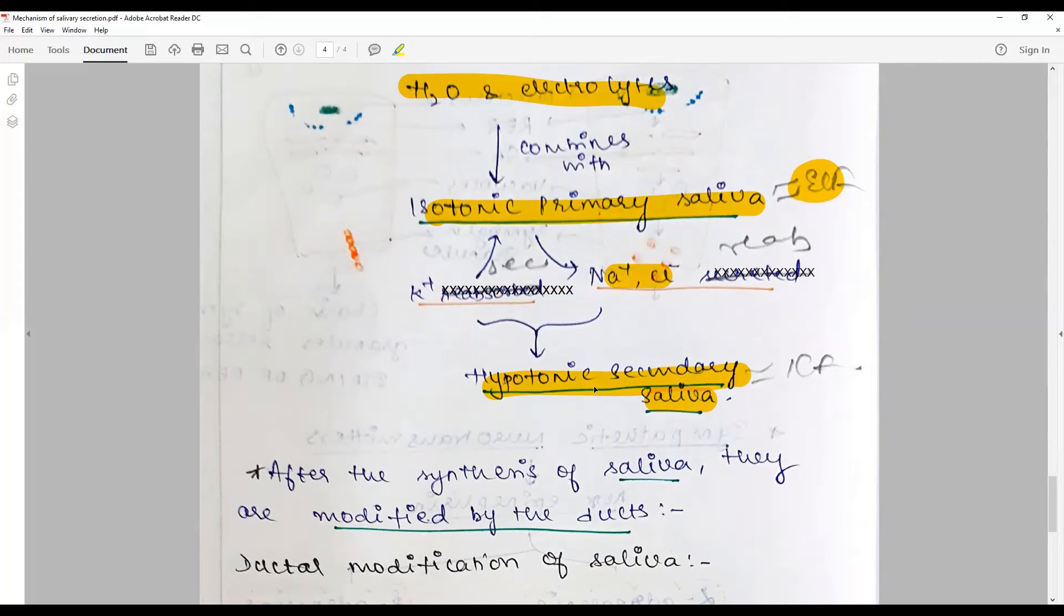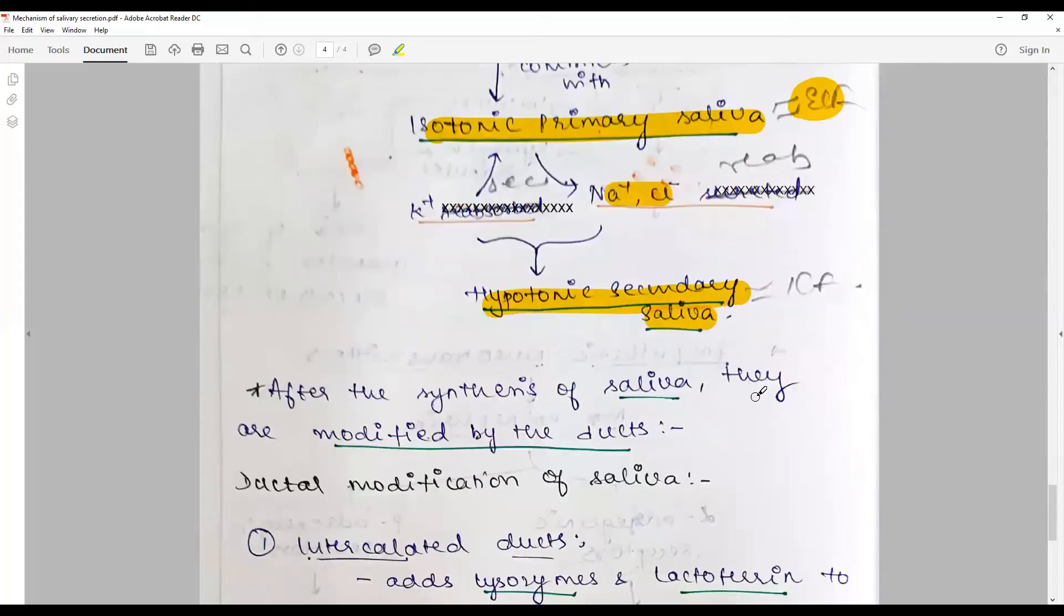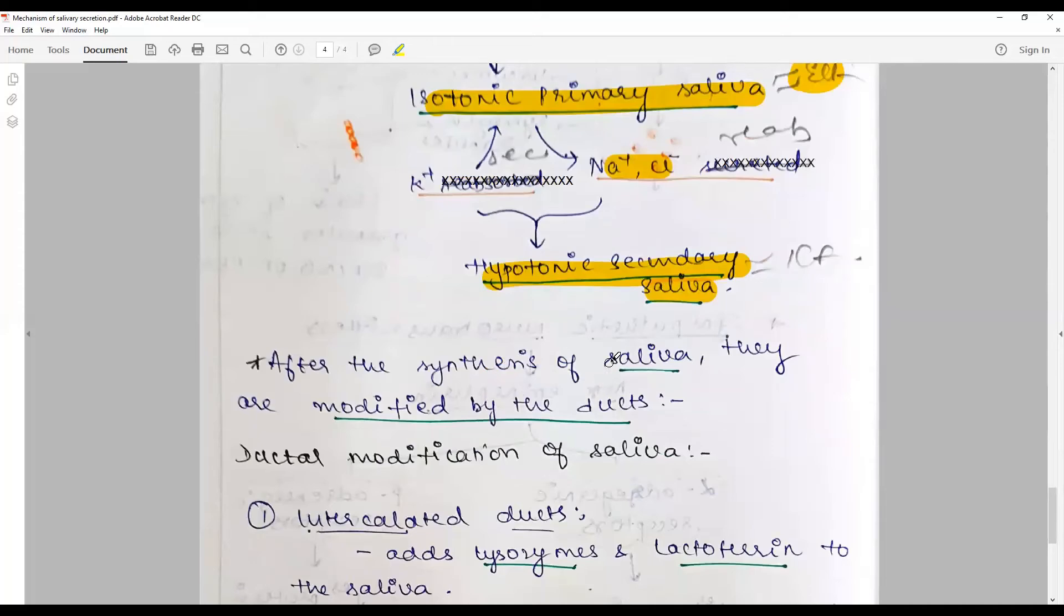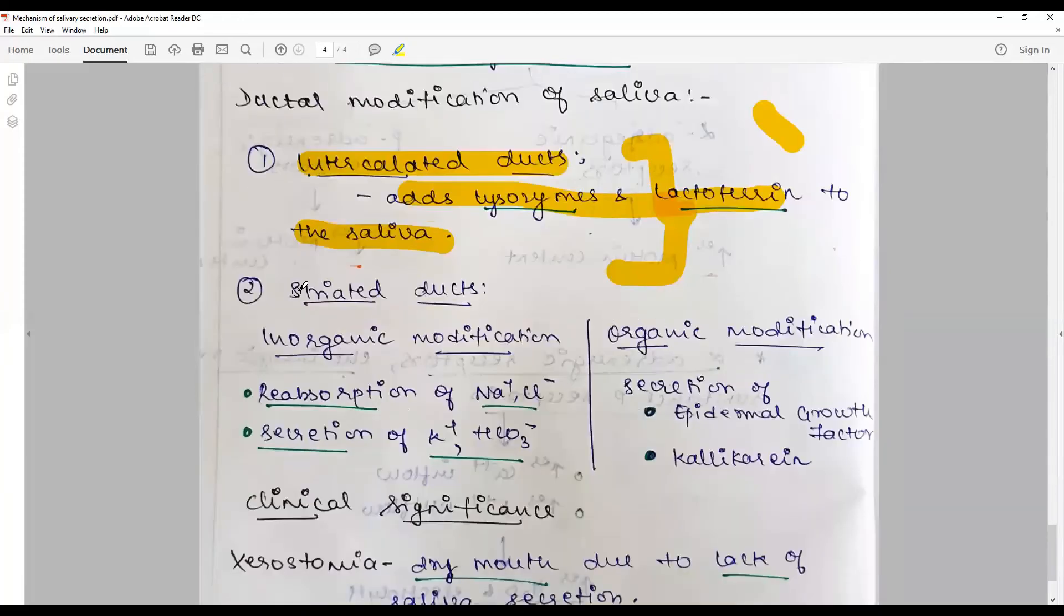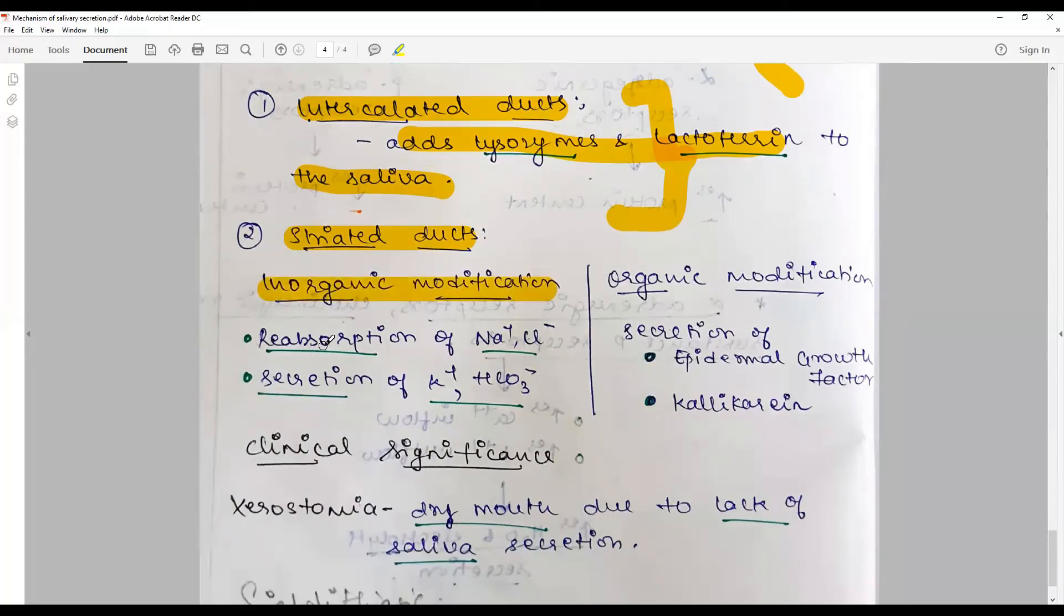After synthesis of saliva, they are modified by the ducts. The primary ductal modification of saliva happens in the intercalated ducts, wherein lysozyme and lactoferrin are added to the saliva. The defense mechanism is stimulated here. The major ionic modification happens at the striated ducts; that is why they have a lot of mitochondria to give power to the cells. The striations are caused by the mitochondria. The inorganic modification that happens is the reabsorption of sodium and chloride and secretion of potassium and bicarbonate into the hypotonic solution. The organic modification that happens is secretion of epidermal growth factor and kallikrein.